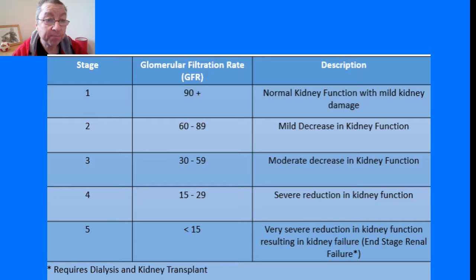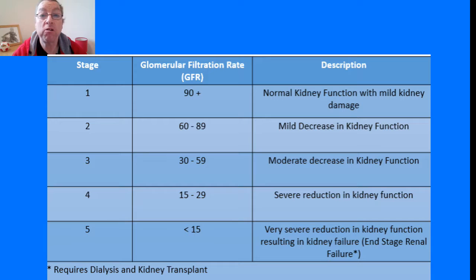Stage 5 is established kidney failure where the GFR is less than 15%, and that's when you need a kidney transplant or dialysis. A simple urine test is also done at the same time to look for signs of protein leaking into the urine, which is another sign of kidney damage.